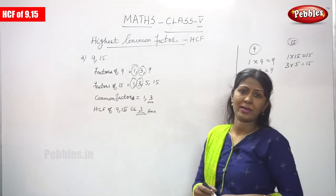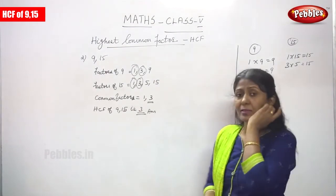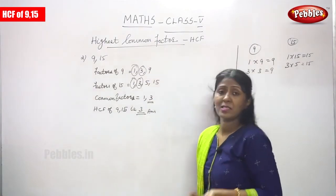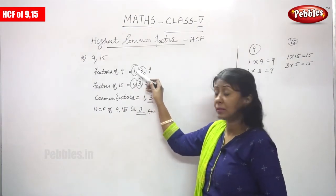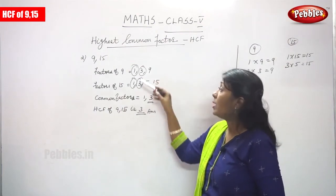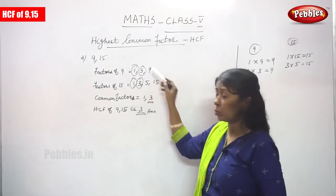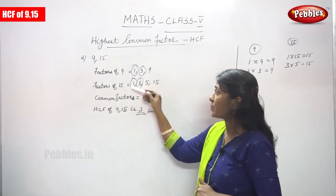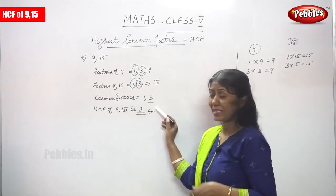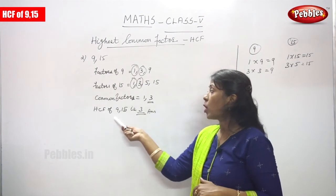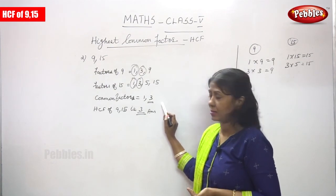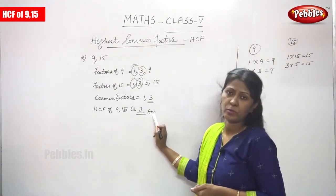Then you have to write the common factors. The common factor is nothing but the factors present in both the numbers given in the question. 1 is a factor of both 9 and 15, and 3 is a factor of both 9 and 15. So 1 and 3 are present in both places — these are the common factors: 1 and 3. Now the highest common factor of 9 and 15 — the greatest number among the common factors — is 3. So HCF of 9 and 15 is 3. This is the answer.